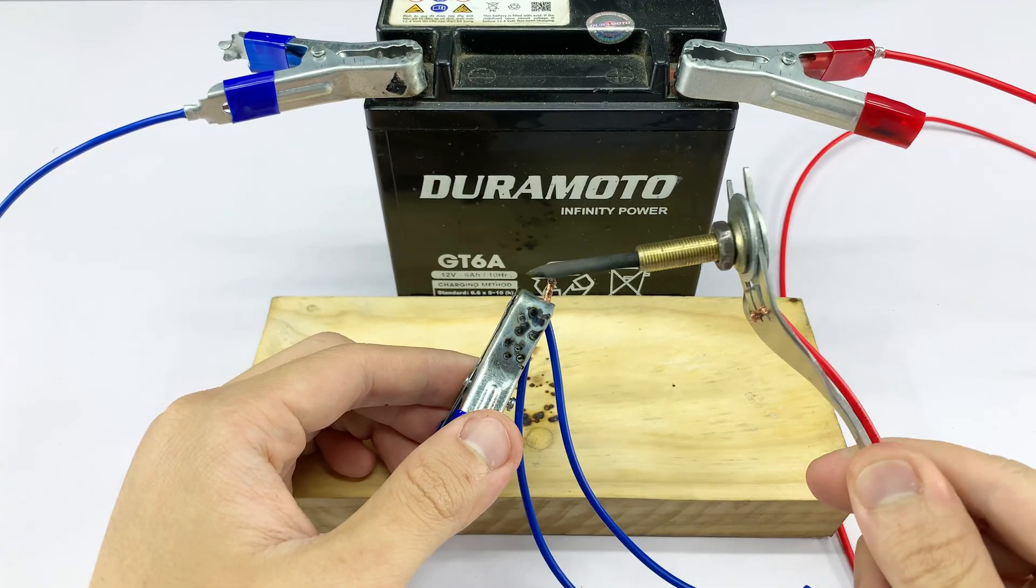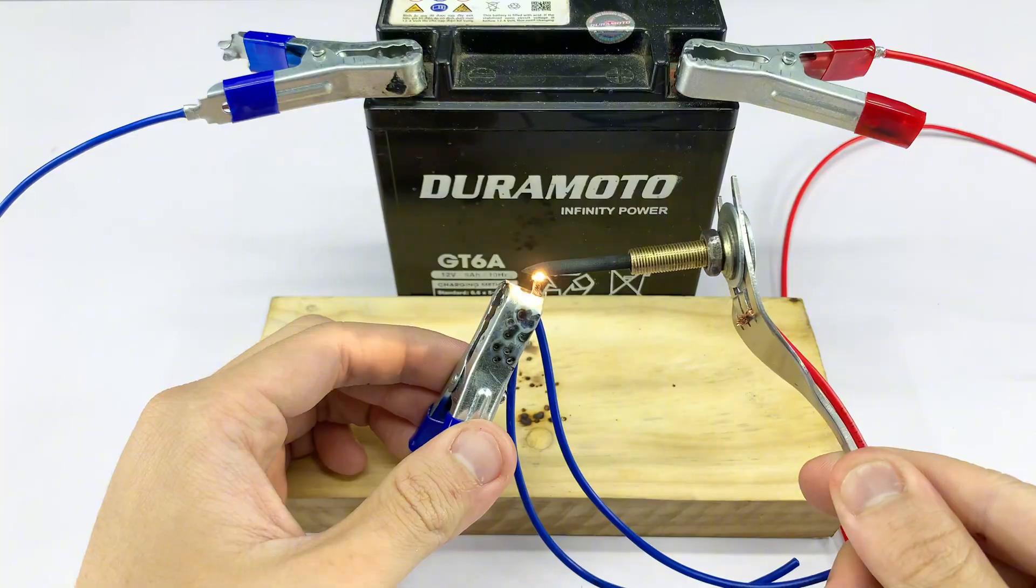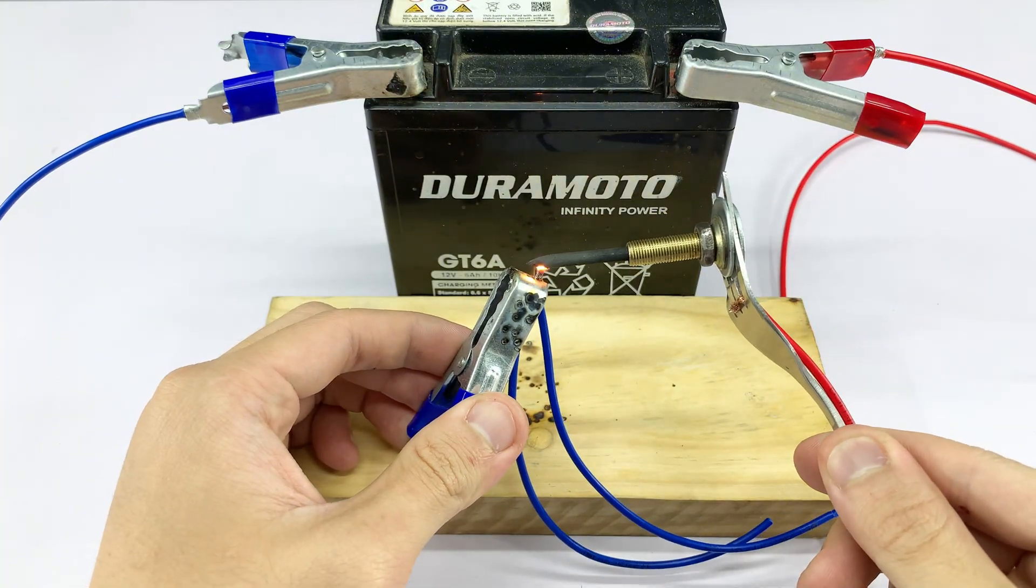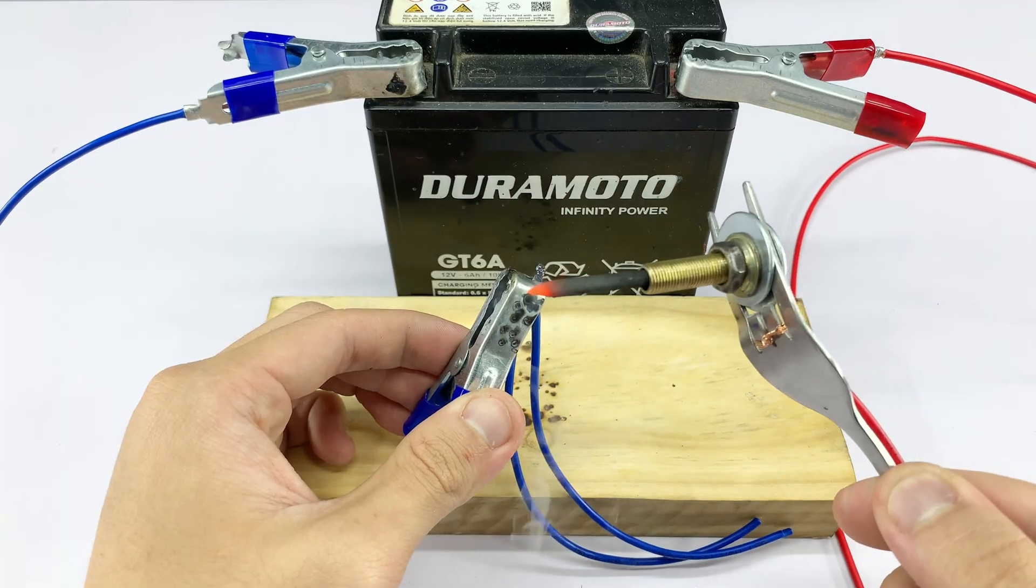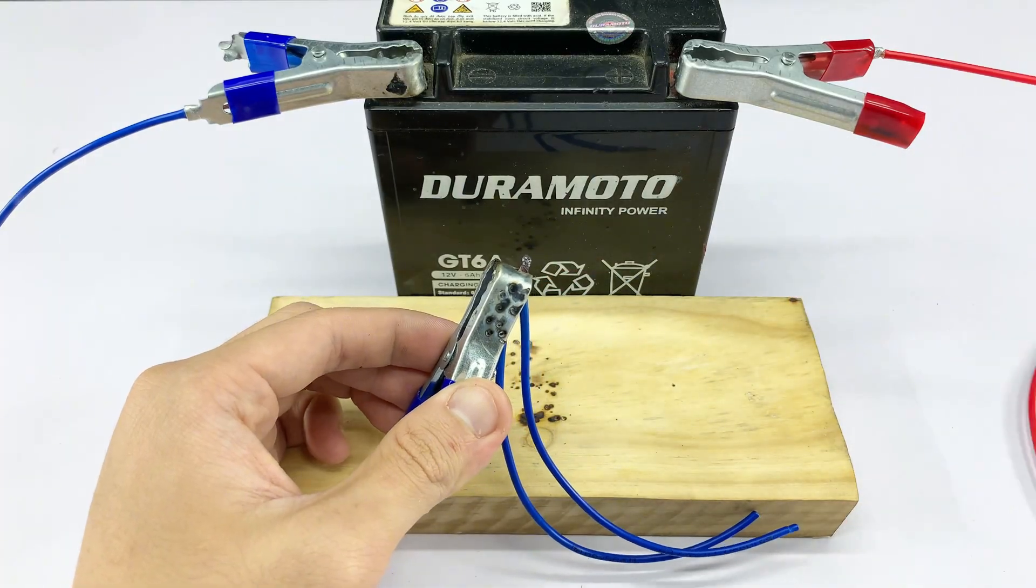Now I'm applying the heated carbon rod to the twisted wires. Immediately, you can see the wires glowing and melting together. This demonstrates its effectiveness as a quick soldering or joining tool.